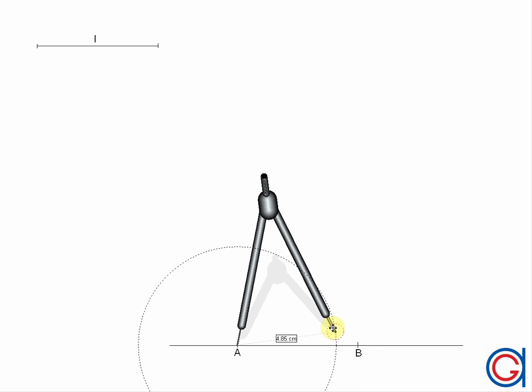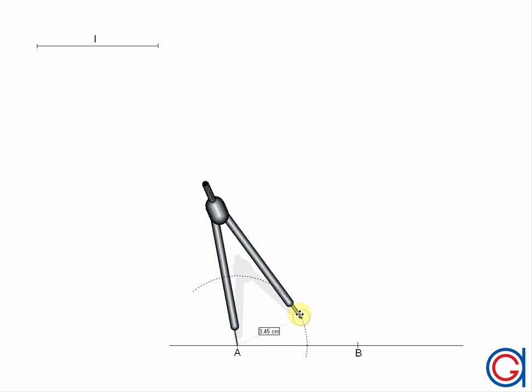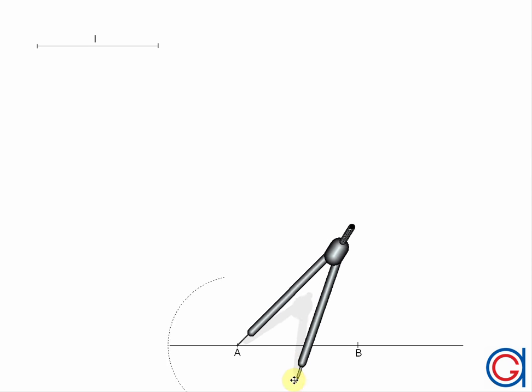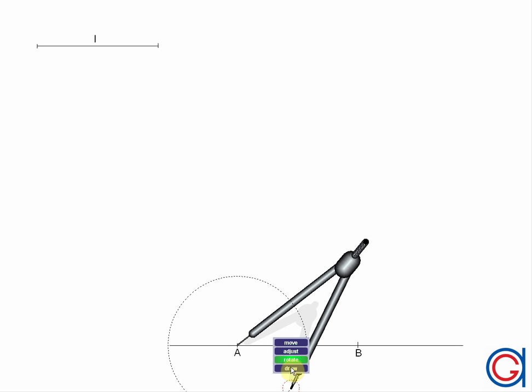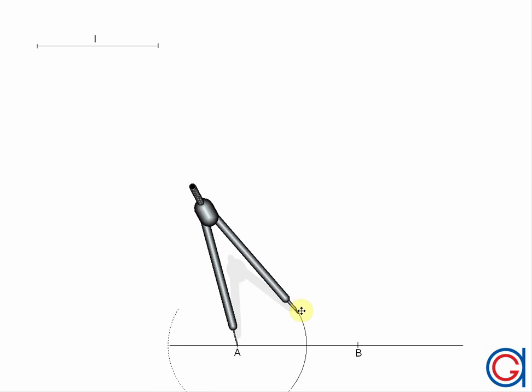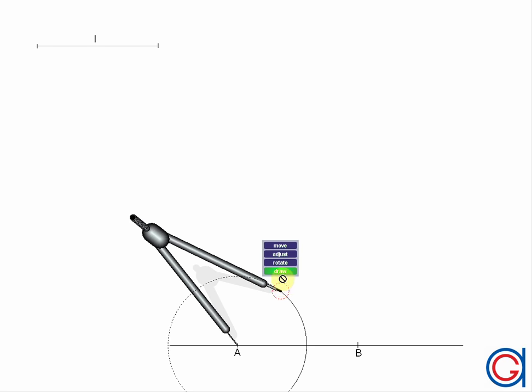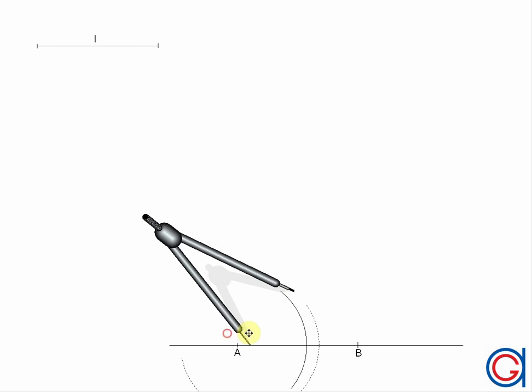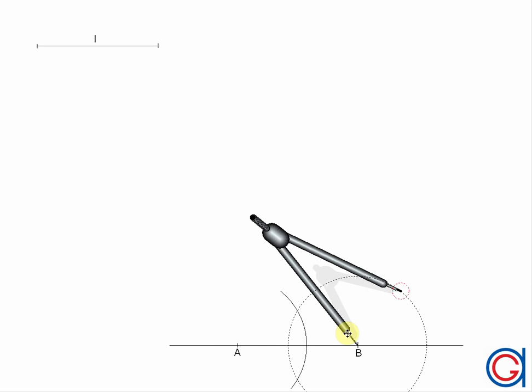Now we have the first side of our octagon located. The next step is to draw the perpendicular bisector of the line segment AB. To do this we must draw two arcs with the same radiuses. These radiuses must be longer than half of the line segment AB as shown here in the video.